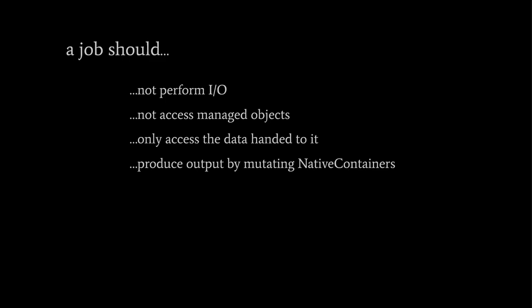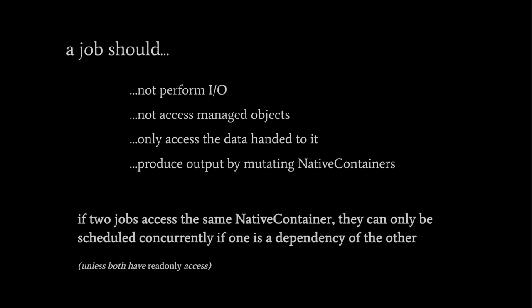For example, if the purpose of a job is to calculate a single number, we create a native array of length 1 and hand the array to the job before scheduling it. In the job, we store the calculated number in the single slot of the array, and after the job finishes, we can read the result from the array. It is these native containers that might be shared between jobs, and so might cause scheduling conflicts. To avoid one job interfering with another concurrently scheduled job that accesses the same native container, one job must depend upon the other, directly or indirectly.